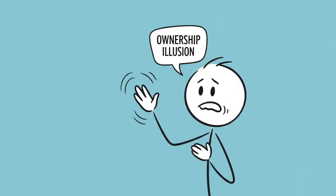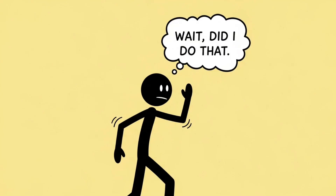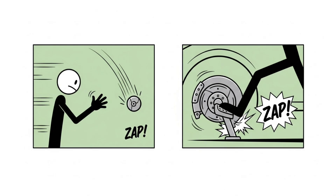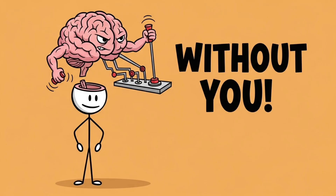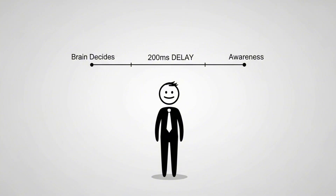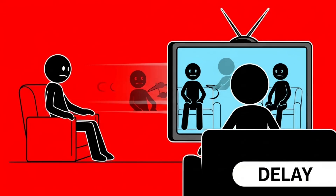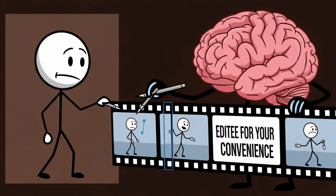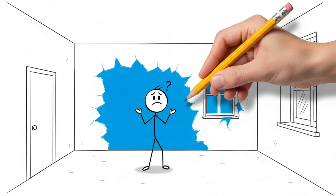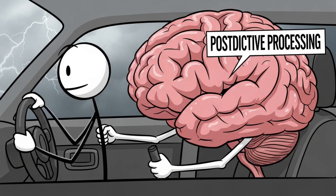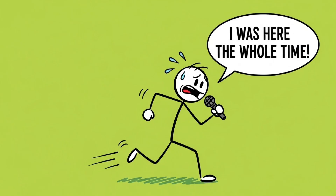Number 3: The Ownership Illusion. Ever feel like your body does things before you decide to do them — like catching something mid-air or slamming the brakes just in time? That's not instinct. That's your brain acting without you. There's a delay of about 200 milliseconds between when your brain decides to move and when you become aware of it. So technically, your brain moves your body before you do. You're basically watching a live broadcast of yourself on a slight delay. Your brain edits the timeline to make it feel like you made the decision consciously — it literally rewrites reality to keep you from realizing how little control you have. This is called post-dictive processing: your brain fills in cause and effect after the fact so you feel like you're the one steering. It's like your consciousness is a narrator who shows up late but still insists they were there the whole time.